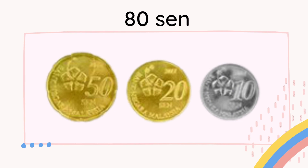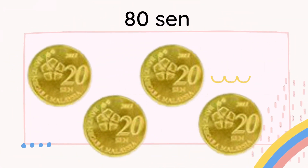This is how we represent 80 sen in coins. We can use 1 piece of 50 sen, 1 piece of 20 sen, and 1 piece of 10 sen — altogether 80 sen. We can also represent 80 sen using 4 pieces of 20 sen. Ada banyak cara untuk tunjukkan 80 sen guna duit syiling — ini antara caranya.